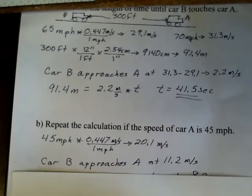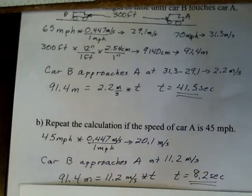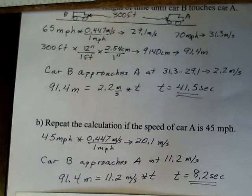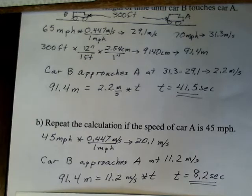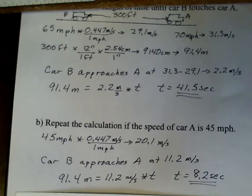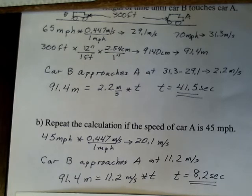Again, distance equals rate times time. 91.4 meters equals the closing rate of 11.2 meters per second multiplied by time. Now car B only has 8.2 seconds to change something.